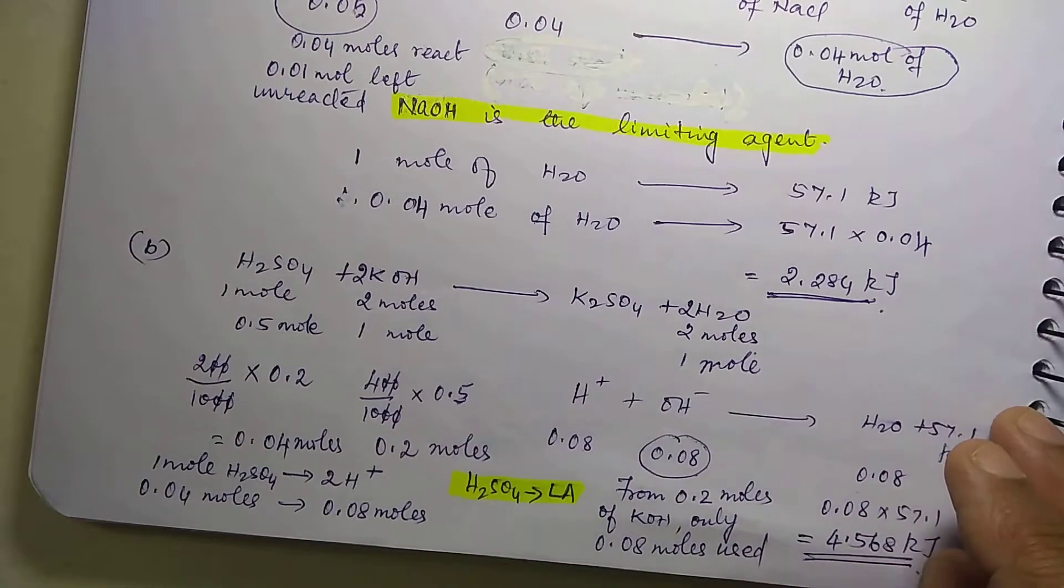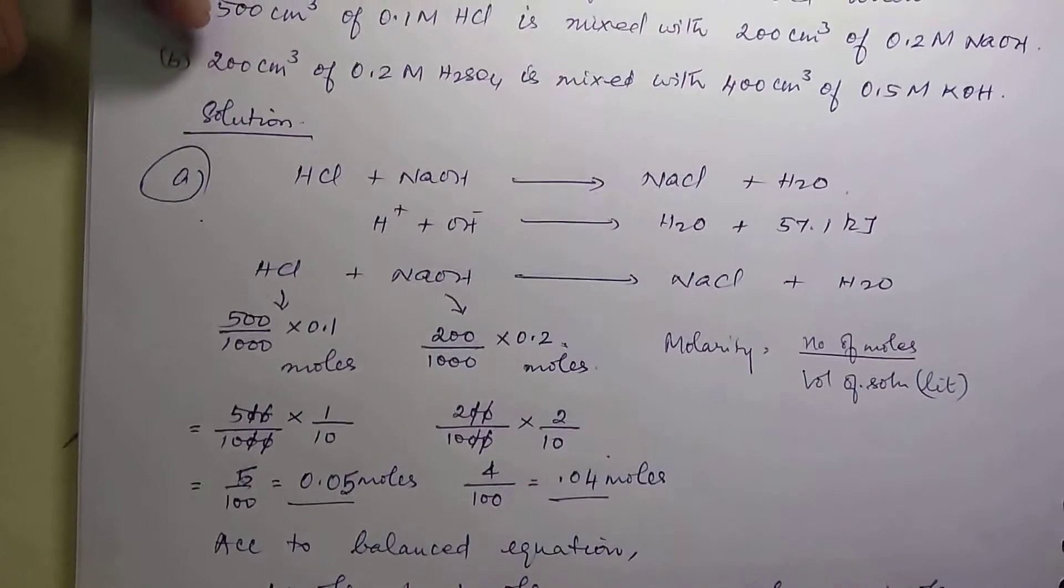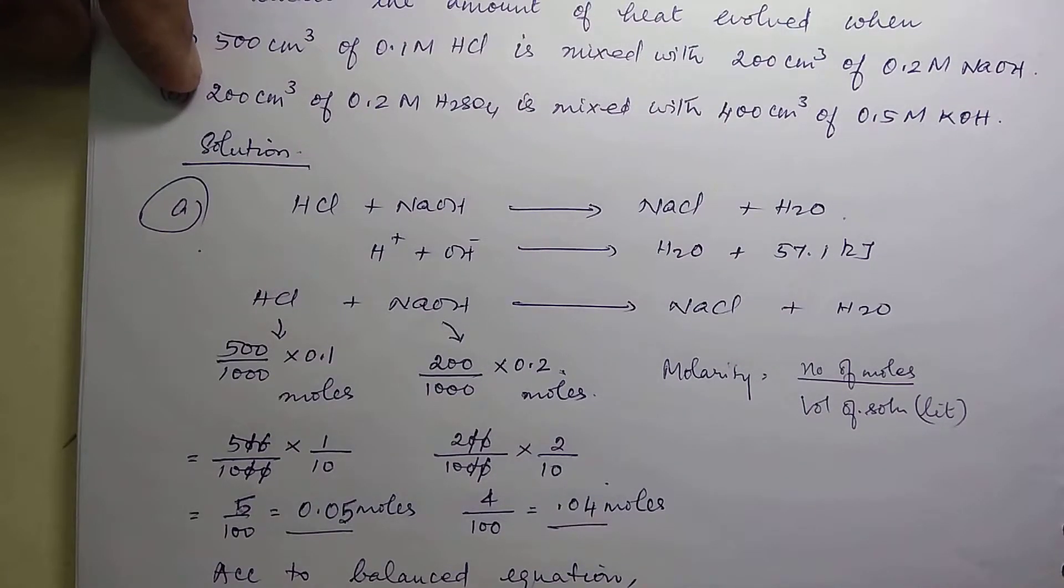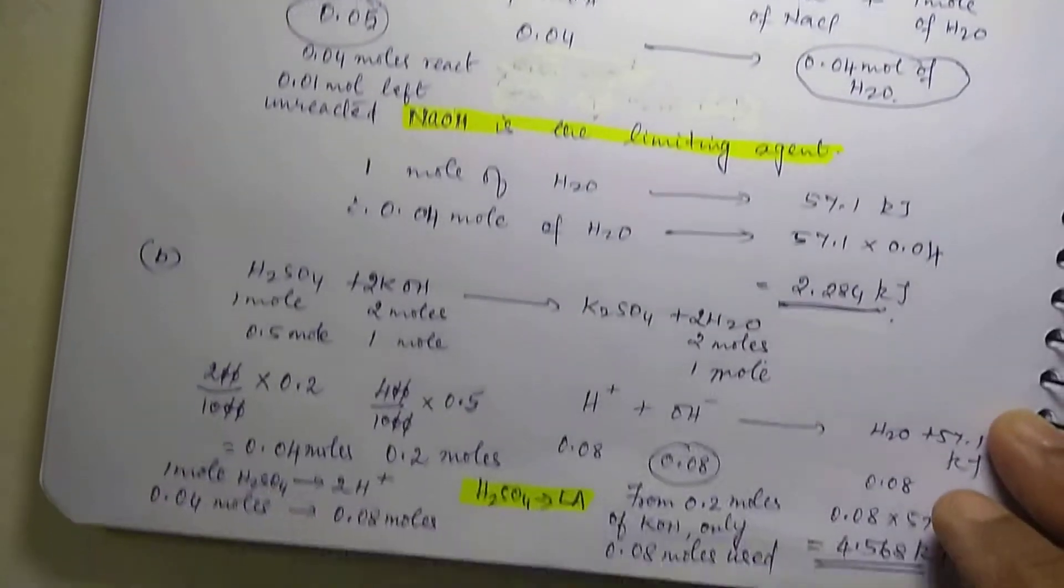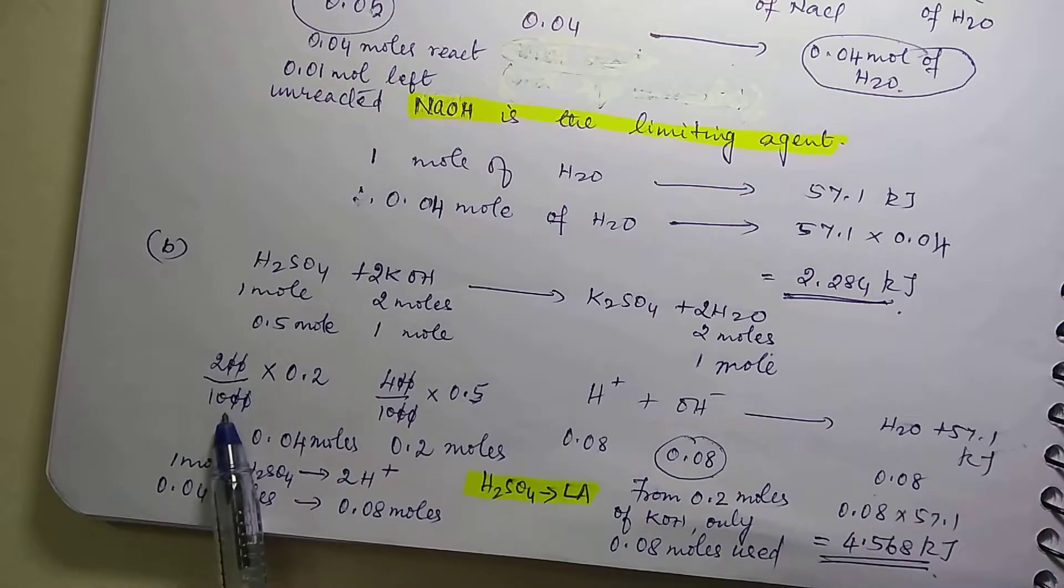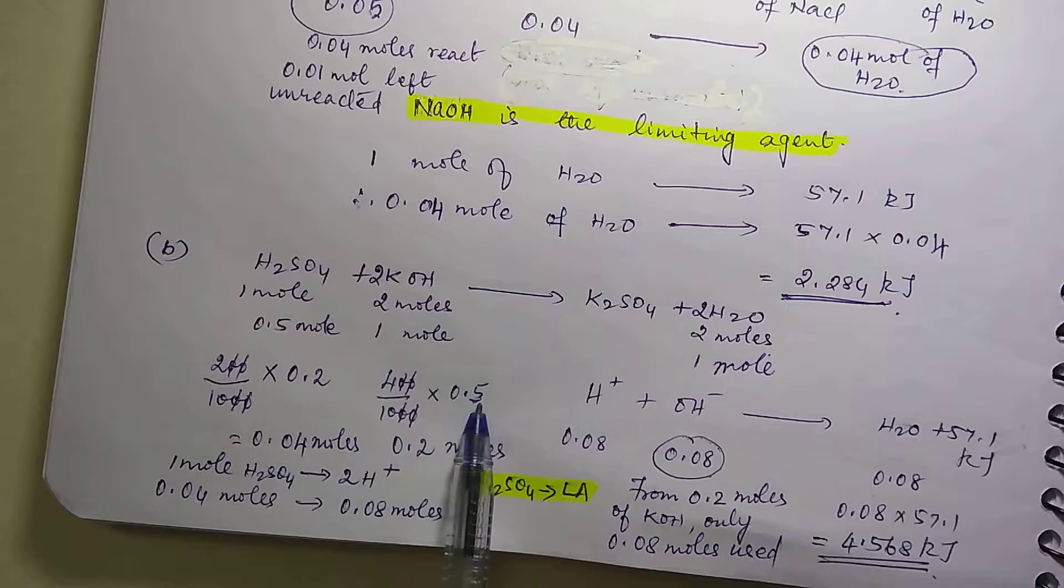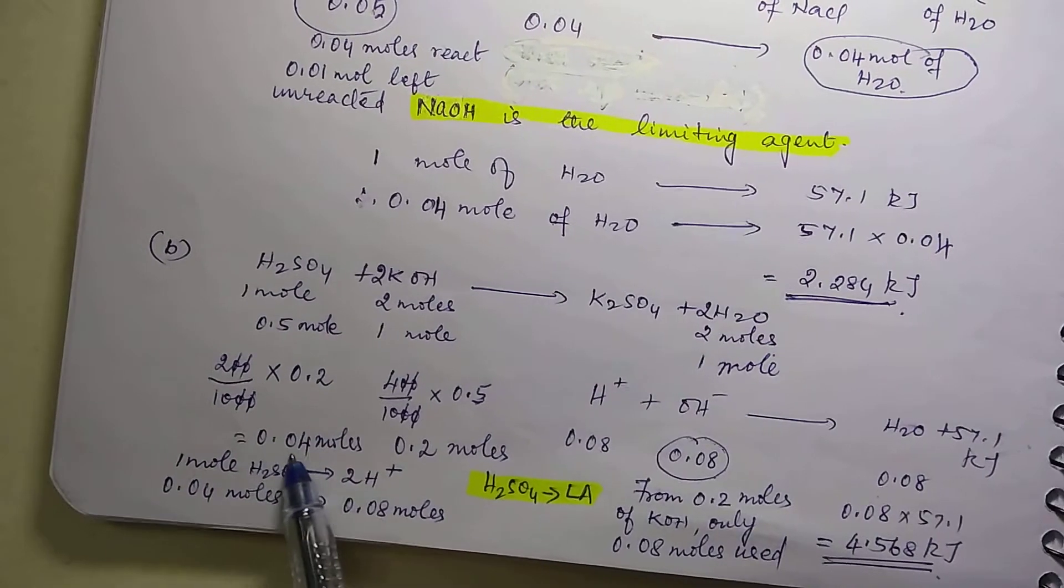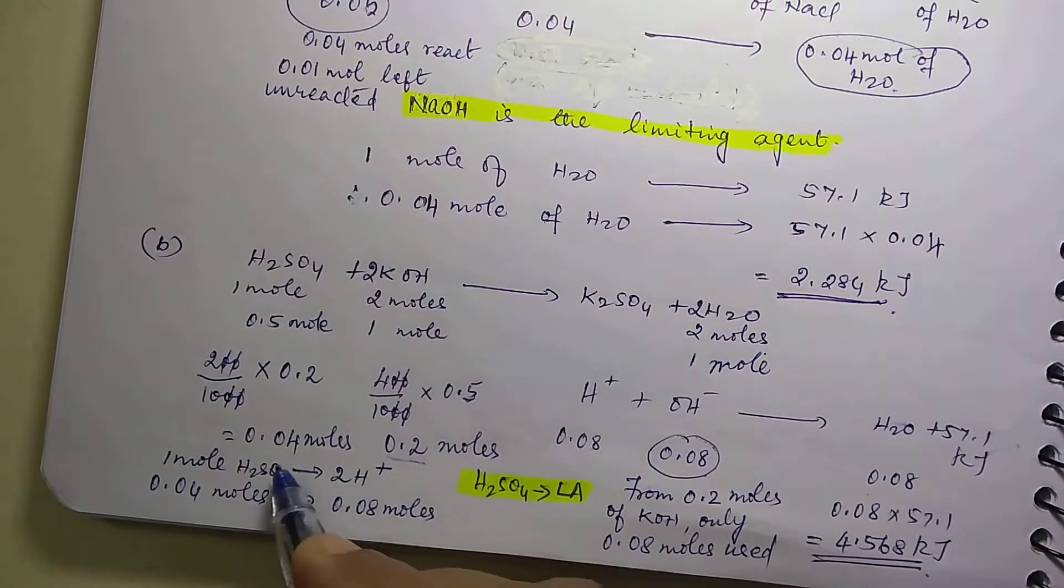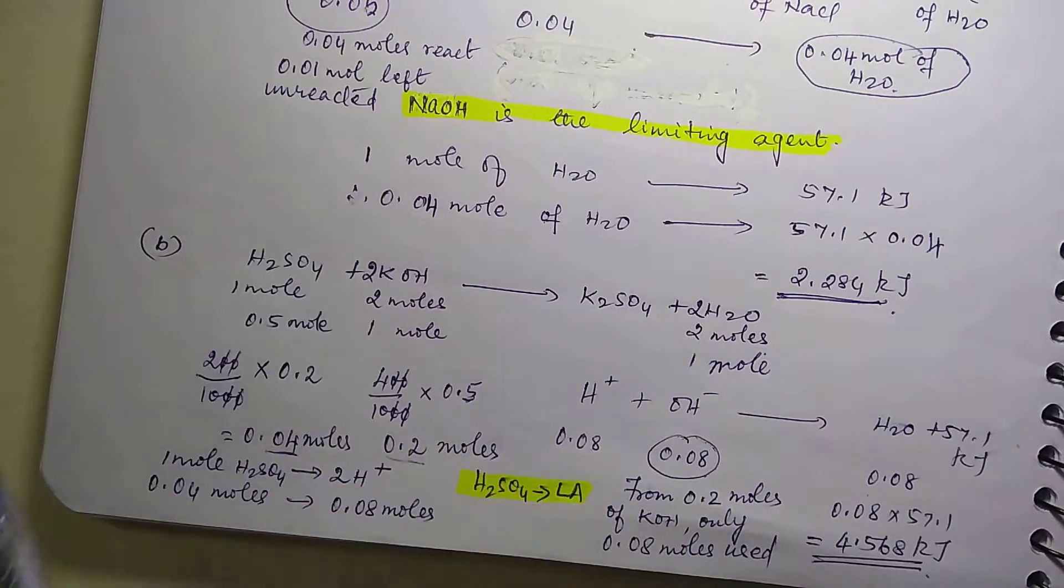Now we are going to calculate the volume of sulfuric acid and KOH that is given in the form of number of moles. So 200 upon 1000 times 0.2, 400 upon 1000 times 0.5. KOH is 0.5 molar, H2SO4. So this you will get 0.04 moles and KOH you are getting 0.2 moles. So 0.04 moles of sulfuric acid you are getting.